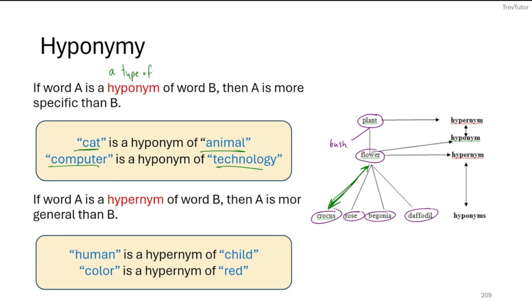Now, hypernyms are just the opposite direction. Hypernym would be like a more general case. So human is a hypernym of child. Human is a more general case than child, probably a young human. And color is a hypernym of red. Now, whenever you have a hyponym, you can always reverse the order to make a hypernym relationship. So we just call this hyponymy in general.